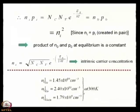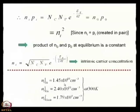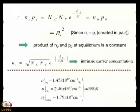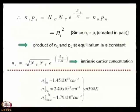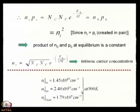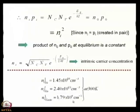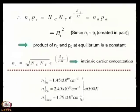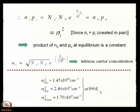The intrinsic carrier concentration values at 300 K are: for silicon, 1.45×10¹⁰ cm⁻³; for germanium, 2.4×10¹³ cm⁻³; for gallium arsenide, 1.79×10⁶ cm⁻³. These values are very much dependent on temperature.